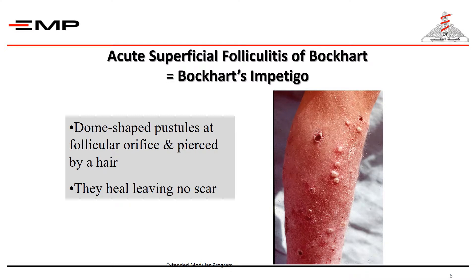Acute superficial folliculitis of Bockhart, or Bockhart's impetigo, is characterized by dome-shaped pustules at the follicular orifice, which are pierced by a hair. Because they are very superficial, the crust falls off leaving no scar.